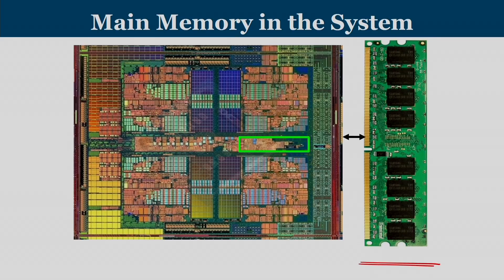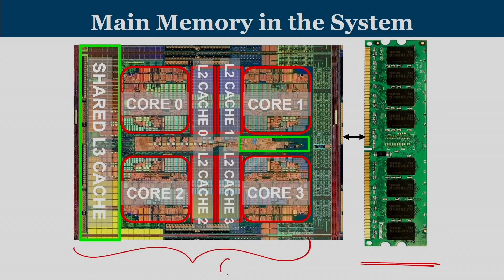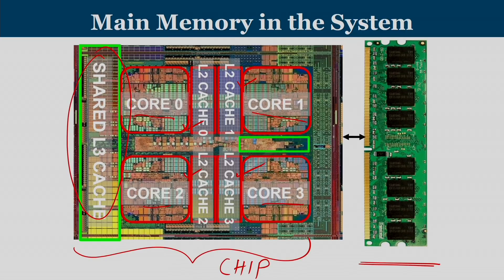This is the layout of a recent multi-core processor by Intel. Within a single chip we have many cores. In this example we have 4 cores: core 0, core 1, core 2, and core 3. The primary cache or L1 cache is inside the core. The L2 caches are kept near to the corresponding core, and then there is a shared L3 cache.